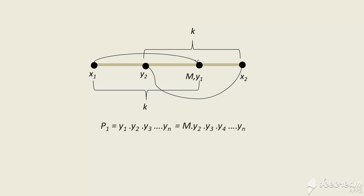Consider P₁ = y₁ · y₂ · y₃ · … · yₙ. Since y₁ = M and y₃, y₄, …, yₙ are the same as x₃, x₄, …, xₙ, the product is decided by y₁ and y₂. As the product of y₁ and y₂ is greater than the product of x₁ and x₂, we can say that P₁ > P.